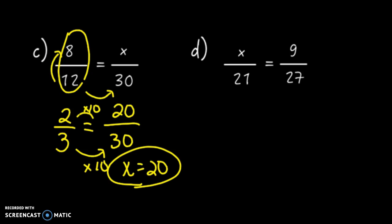And then D. x over 21 equals 9 over 27. I've got a couple methods here. I could reduce. I'm going to try this dividing thing. I look from 27 to 9. All I have to do is divide by 3. So I'm going to do the same thing here. From 21 to x, you can also just divide by 3. So x equals 7.